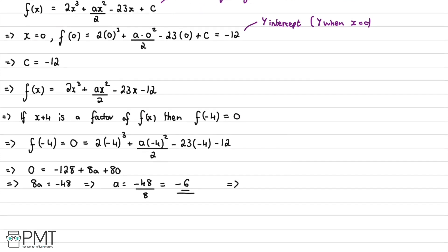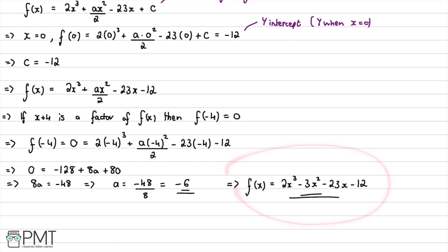Now we can rewrite the expression with a = -6. We have 2x³ + (-6)x²/2 - 23x - 12, which simplifies to f(x) = 2x³ - 3x² - 23x - 12. That's our completed answer — f(x) in its simplest form.